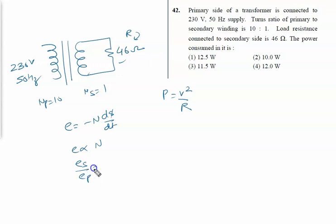ES upon EP: EP is 230 volt, NS number of turns in secondary is 1, number of turns in primary is 10. So we will calculate ES is given by 23 volt. This is the voltage at the secondary.